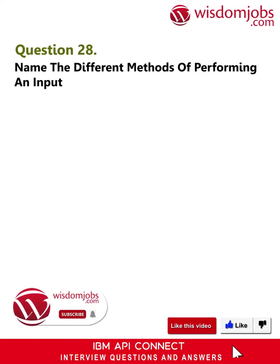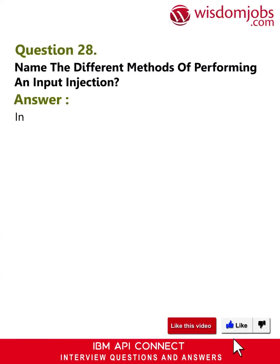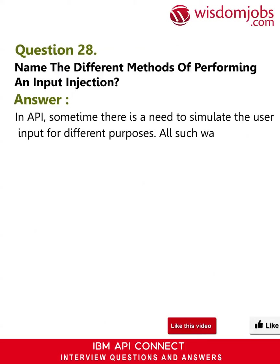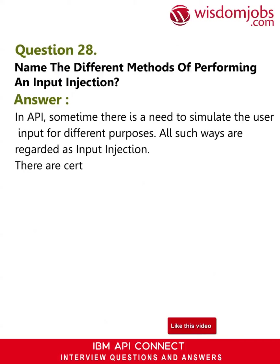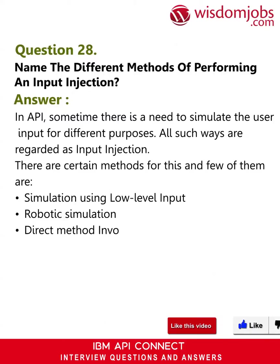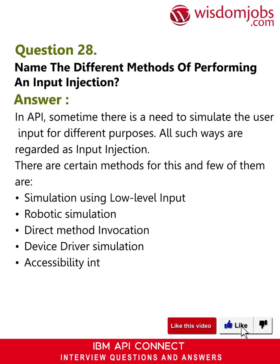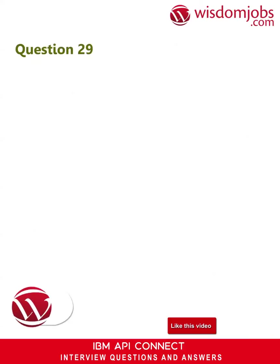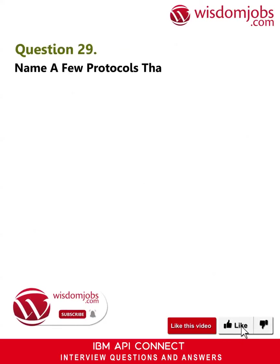Question 28: Name the different methods of performing input injection. Answer: In an API, sometimes there is a need to simulate user input for different purposes — all such ways are regarded as input injection. The methods include: simulation using low-level input, robotic simulation, direct method invocation, device driver simulation, and accessibility interface invocation.